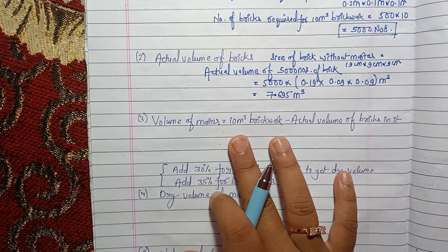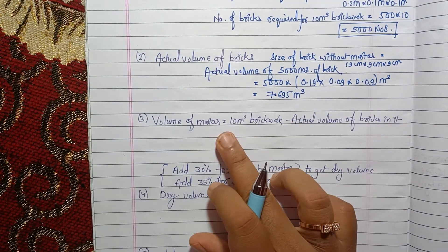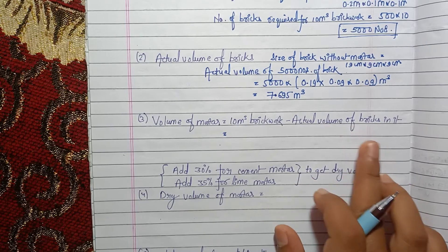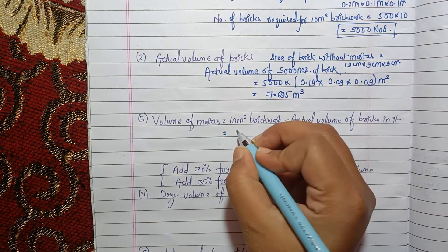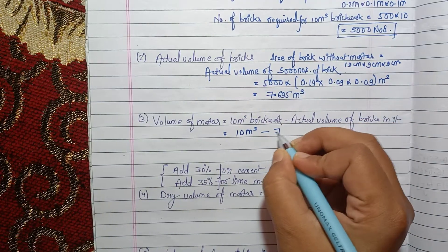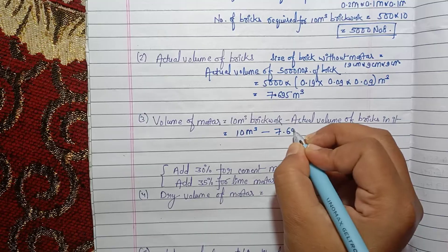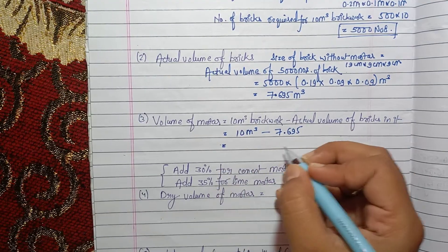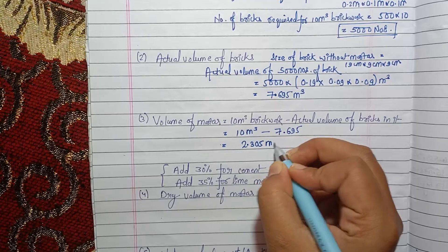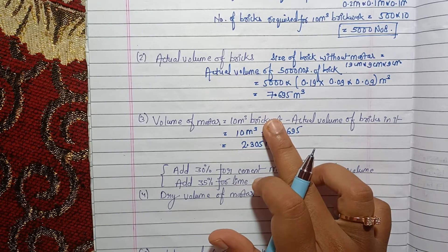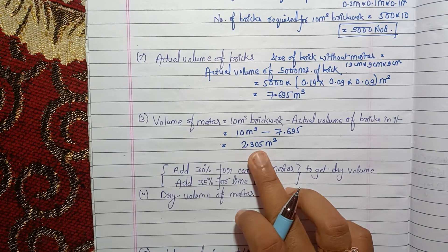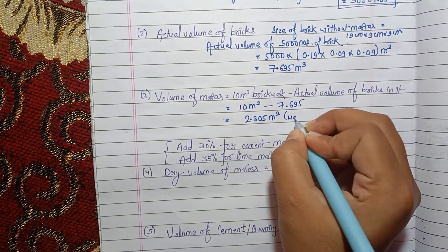Now we will calculate the volume of mortar. The volume of mortar equals the total 10 cubic meter brickwork minus the actual volume of bricks. So 10 minus 7.695 gives the volume of mortar as 2.305 cubic meters. This is the wet volume of mortar.